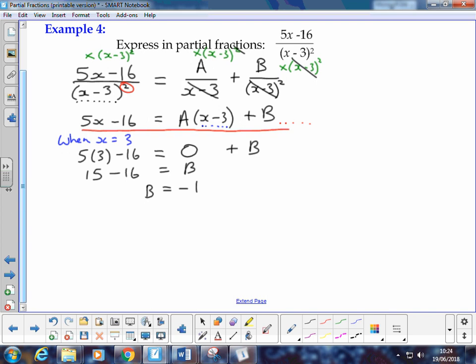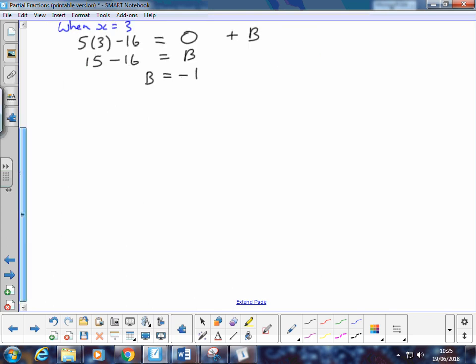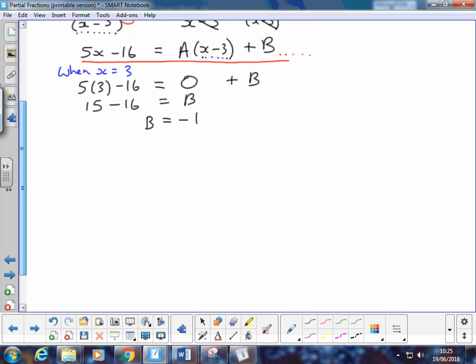It's always absolutely fine to pick any value for x and to substitute it in, but normally what that would do, it would keep both A and B in our equation. The whole point about picking a particular value is that one of the constant terms disappears. But we don't have to do that anymore because we have a value for B. So what I'm going to do is pick a simple value for x. I could pick x as 1 or indeed 0. So what I'm going to do is sometimes it's just as easy to let x equal 0 and see what happens.